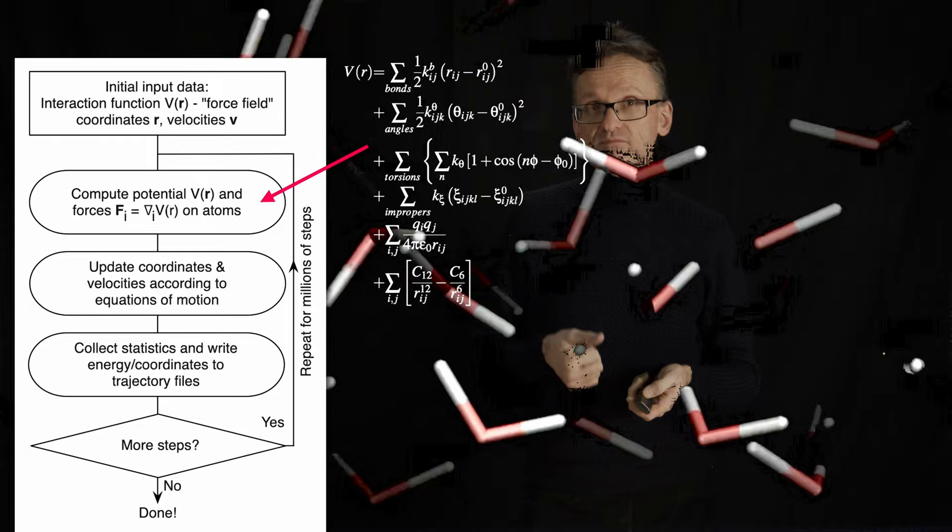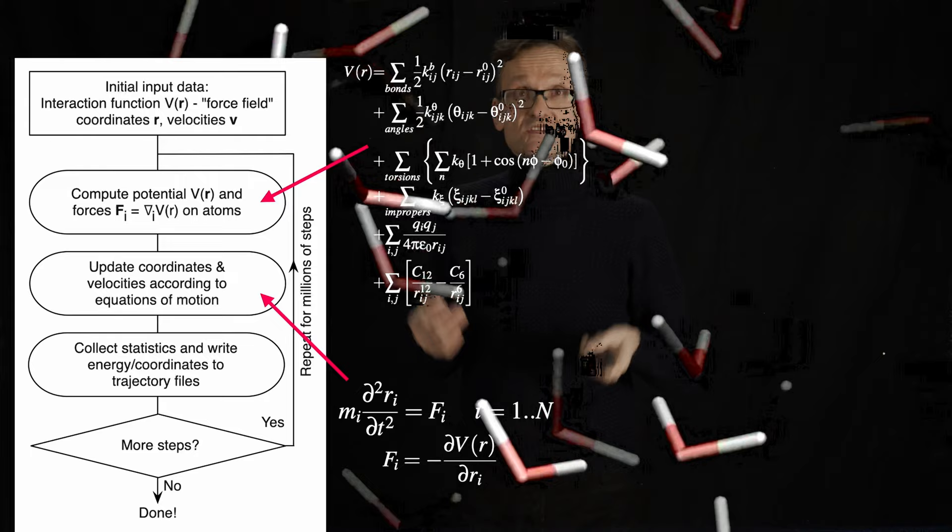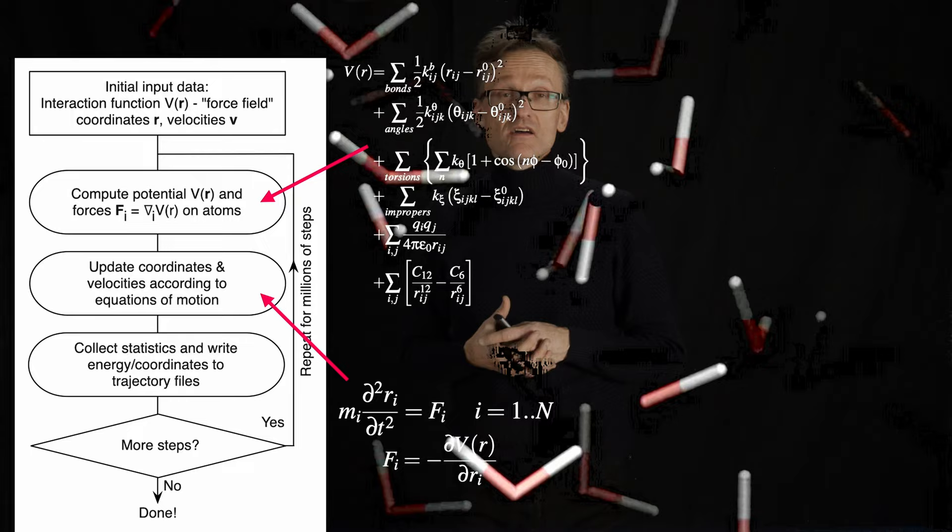The second part, I'm going to need to apply Newton's equations of motion to update my positions. And once I've done that, I probably want to calculate some properties such as energy and temperature. I might want to save the coordinates to a trajectory so that I can look at them. That's the last round box there. And then it's time to go back and keep doing this millions of times.